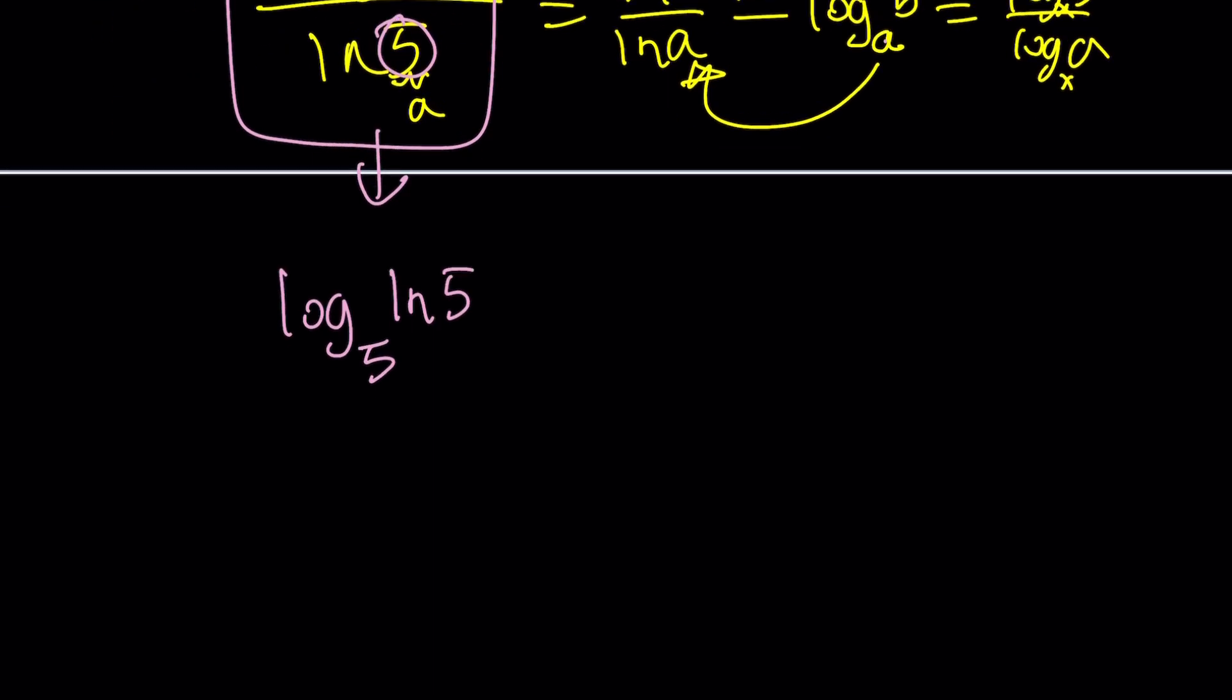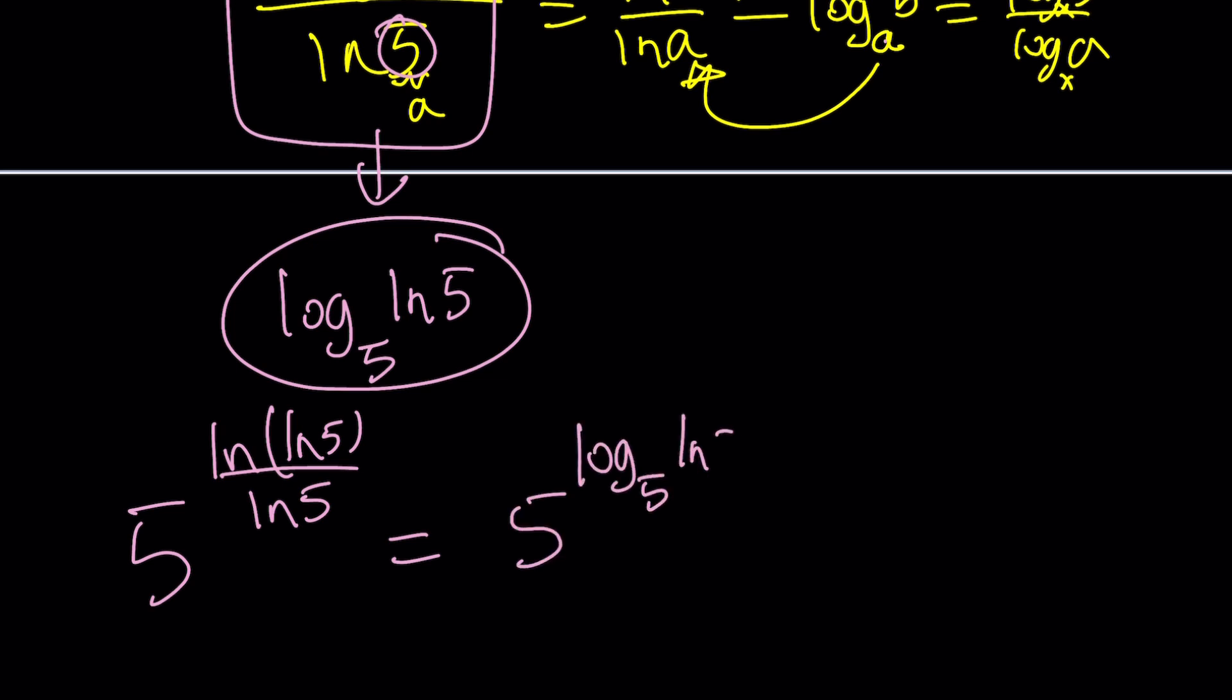Okay, this is not super meaningful because we still got a complicated expression. But you've got to remember, we had 5 to the power ln(ln5) over ln5, and now we know what the exponent is. So, we can replace that with 5 to the power log(ln5) with base 5. Good.